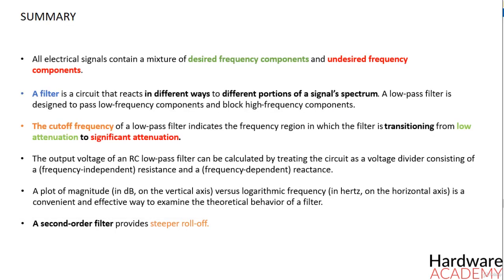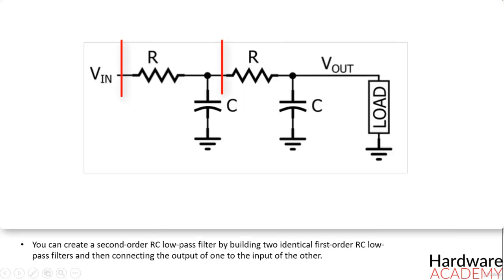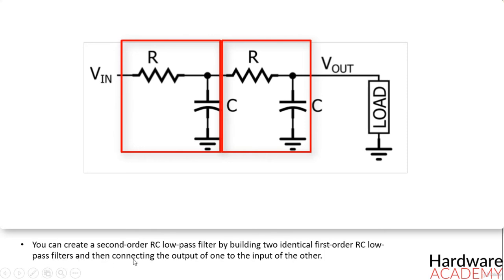You can create a second order RC low pass filter by building two identical first order RC low pass filters and then connecting the output of one to the input of the other.